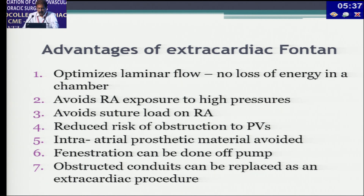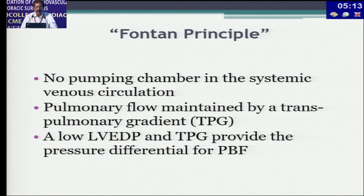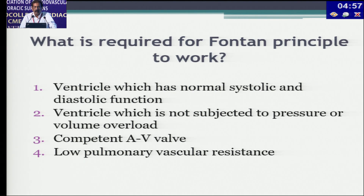There are many advantages of the extracardiac Fontan. Most importantly, it optimizes laminar flow, and the vis-a-tergo is maintained throughout the pulmonary circulation with no energy loss in any chamber. The Fontan principle is that there is no pumping chamber in the systemic venous circulation; pulmonary flow is maintained by a transpulmonary gradient. A low LVEDP and a transpulmonary gradient provide the pressure differential for pulmonary blood flow. For this to work, you need a ventricle with normal systolic and diastolic function, not subjected to pressure or volume overload, a competent AV valve, and low pulmonary vascular resistance.